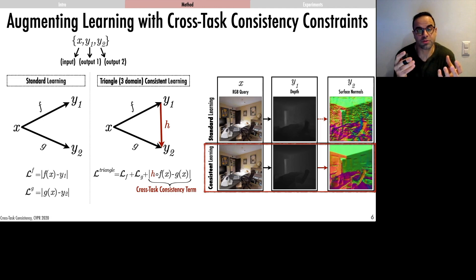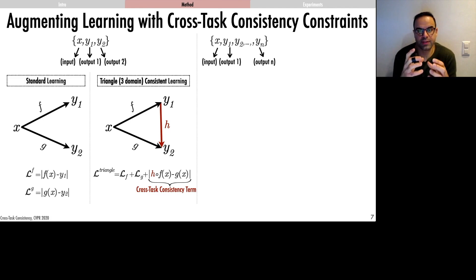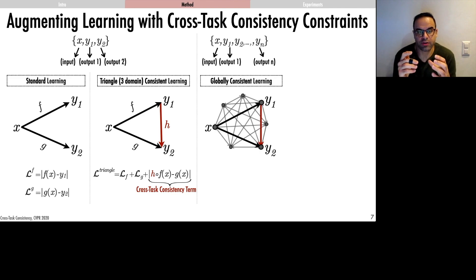Now, the triangle is the most elementary unit of a cross-task consistent system. It offers over only three domains. When we have a large dictionary of tasks, first we show that the triangle constraint can be extended to the more general path invariance constraint.